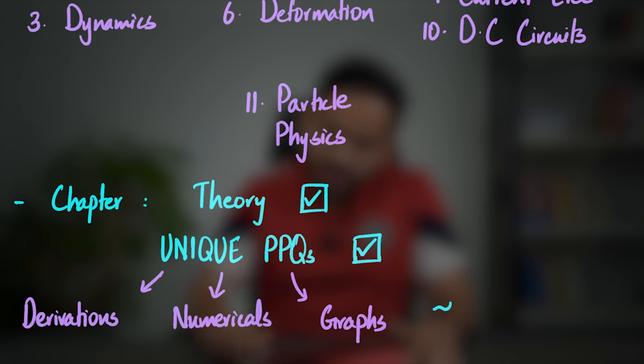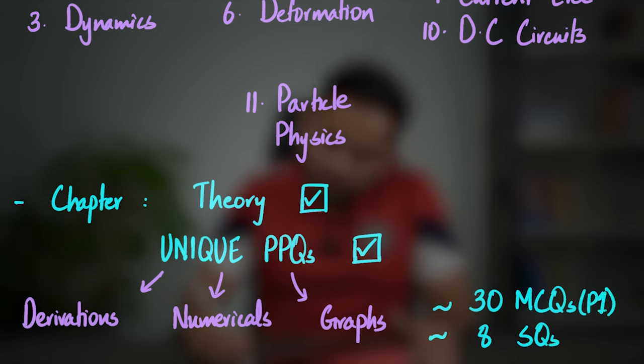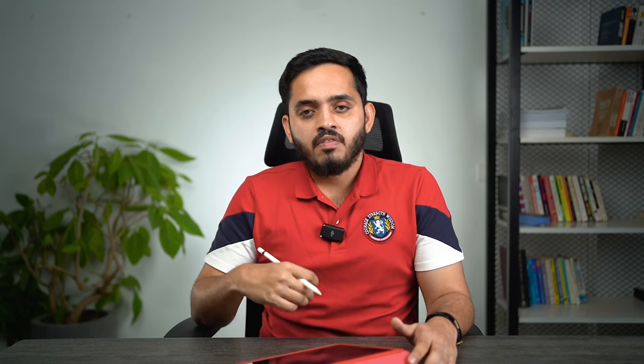Roughly, aim for about 30 MCQs and about 8 structured questions per topic — that's for Paper 1 and Paper 2 respectively. Also, don't make the mistake of only practicing from P1 or only from P2, because you'll be sitting both components in the exam. Think of it this way: a question from P1, with some extra information added, could easily appear as a P2 question.